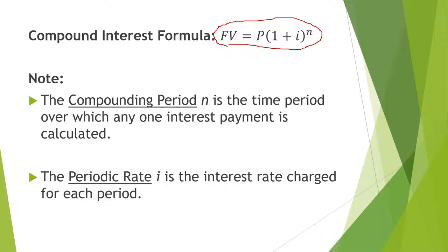We have two new variables: I and N. The compounding period N is the time period over which any one interest payment is calculated. There are a few common compounding periods. Quarterly means four times per year. Monthly means 12 times per year. Daily would be 365 times per year. And semi-annually means two times per year.